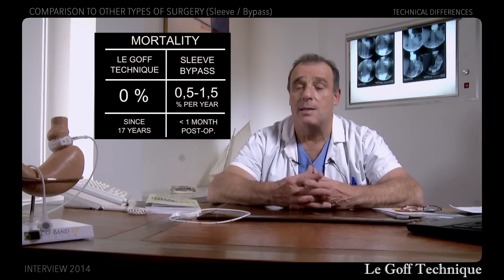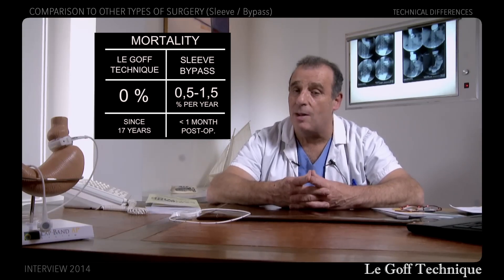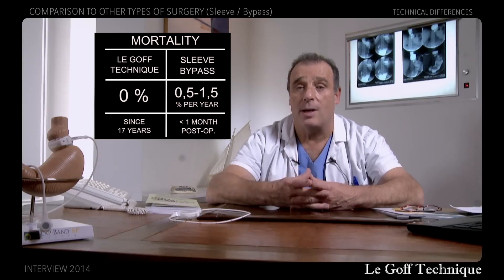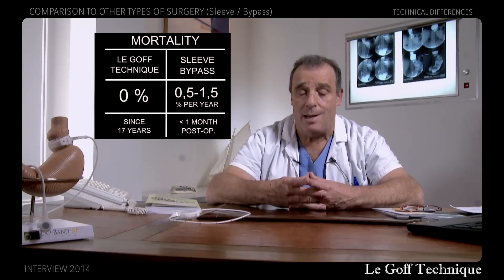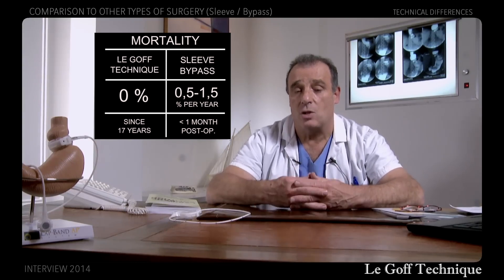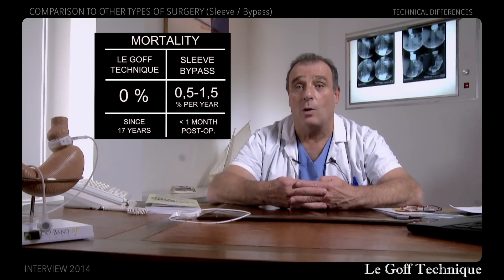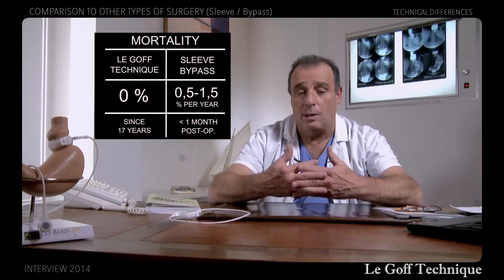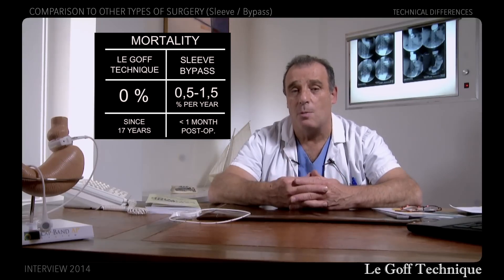This is a very high rate for people in their prime age — the average age of patients is 37, often ranging from 18 to 25 years. We are not operating on elderly, bedridden individuals. The operative mortality in sleeve and bypass is a strong reason to reconsider these methods in comparison to the technique of gastroplasty with partial stomach folding.